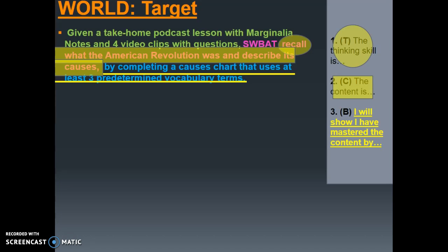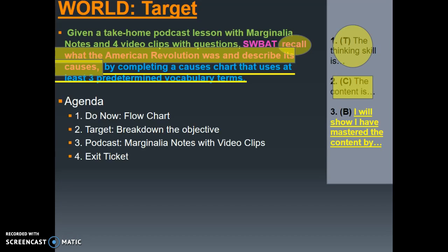Please make sure that you've underlined how you will prove your mastery today. The thinking skill for today is recall — you should have recall circled. The content we're learning is what the American Revolution was and describing its causes. You will show mastery by completing a causes chart using at least three predetermined vocabulary terms. Now that we've broken down the objective with our shapes method, let's take a look at the agenda. We've already completed our do now; we're on the target slide. Next we'll jump into our podcast for marginalia notes, video clips, and then end with an exit ticket.